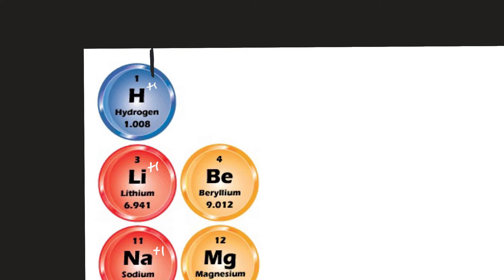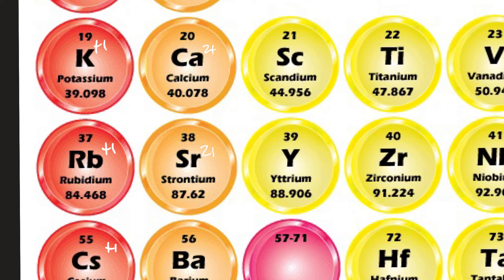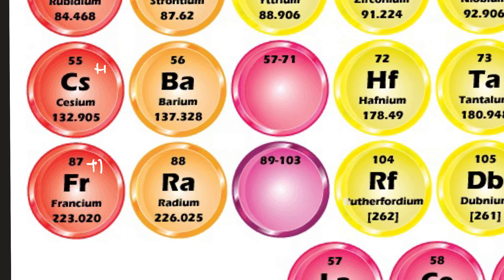Hydrogen can go both ways, but most times we see it as a plus-one. The alkaline earth metals all have two valence electrons, so it's easier to lose two than to gain six. They all have a charge of plus-two: beryllium, magnesium, calcium, strontium, barium, and radium all become plus-two ions.